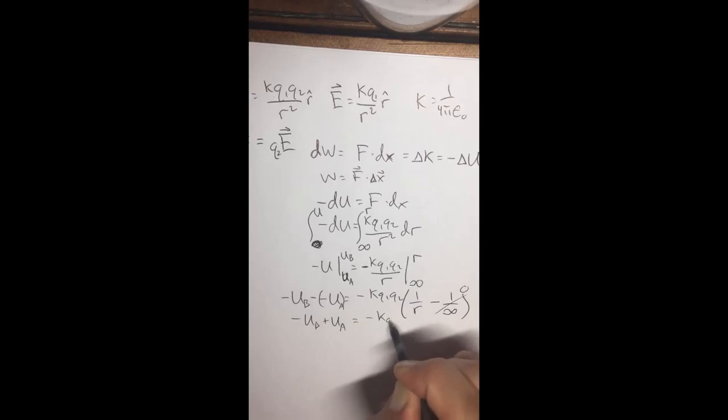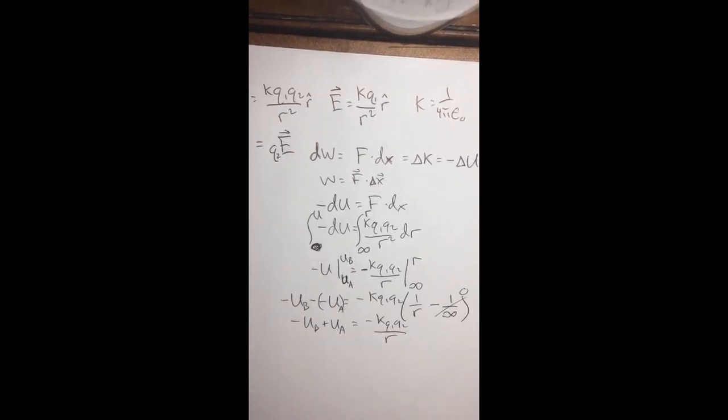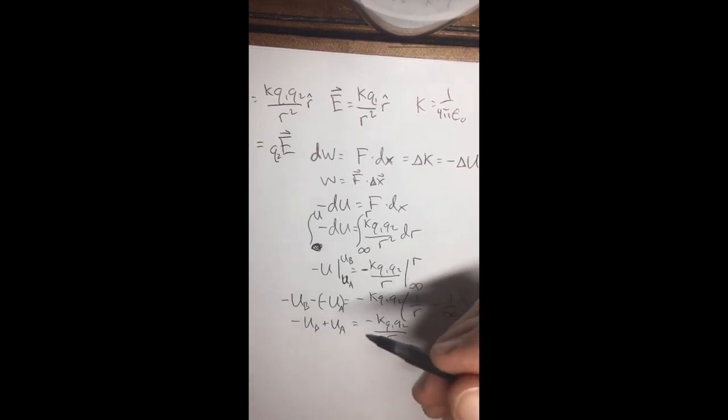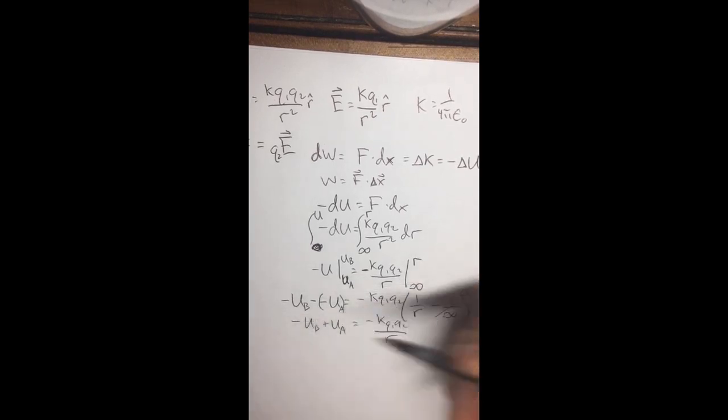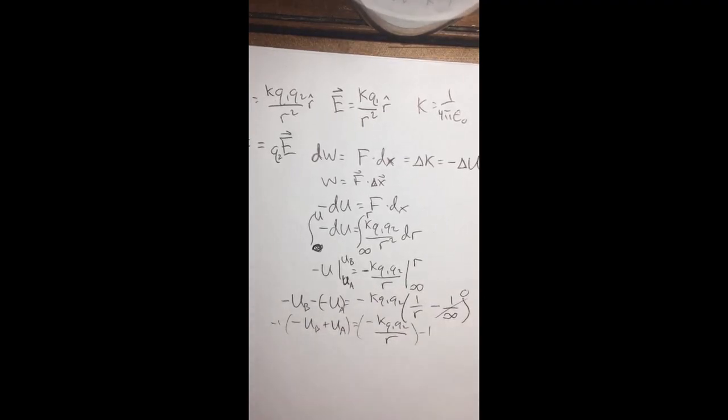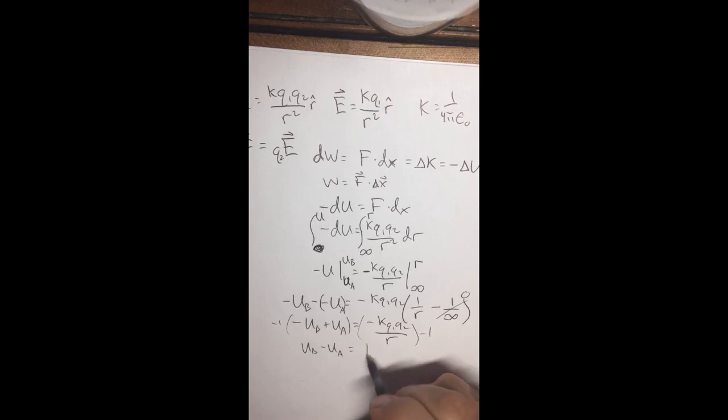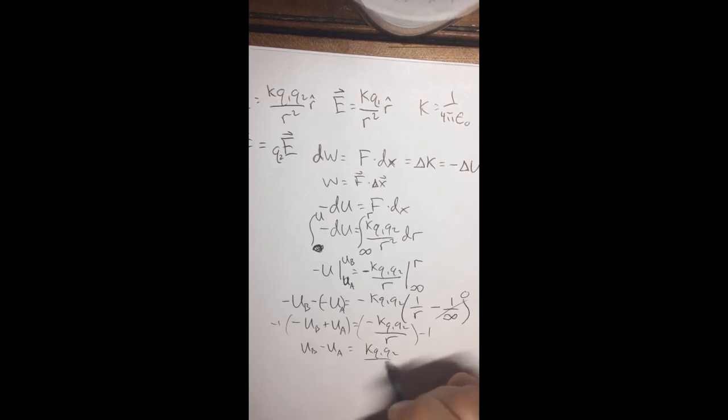Equals a negative K Q1 Q2 over R. Now we're getting to potential change, change of potential energy. So we take a negative on both sides, multiply by negative. And we get UB minus UA equals K Q1 Q2 over R.